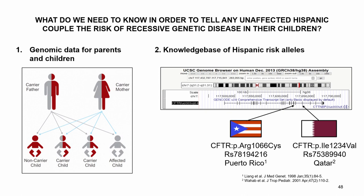You can determine if both parents are carriers for a genetic disease, which in the classical Mendelian sense means there's a one-in-four chance a child will get both risk alleles and have the disease. One example is cystic fibrosis. What we would like is a knowledge base of all Hispanic risk alleles. The reason we focus specifically on Hispanic risk alleles is because risk alleles differ across populations — every human population has different risk alleles. For example, the CFTR mutation found in Puerto Rico differs from the one found in Qatar.